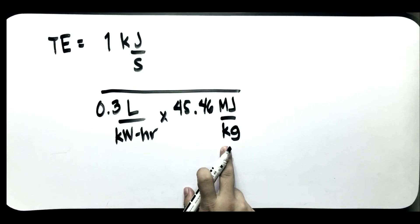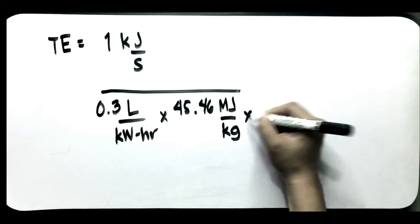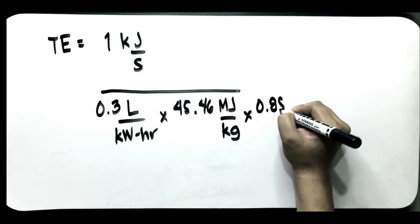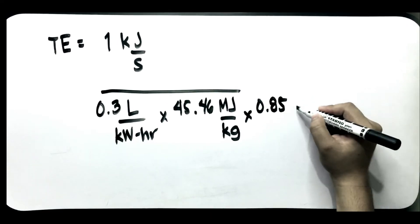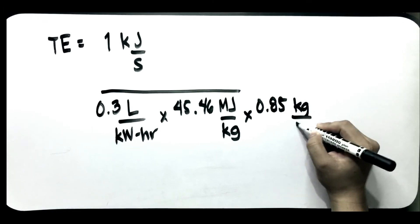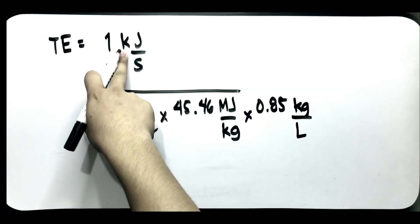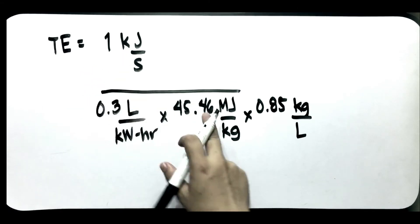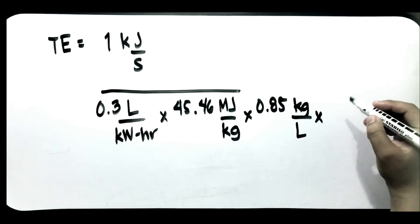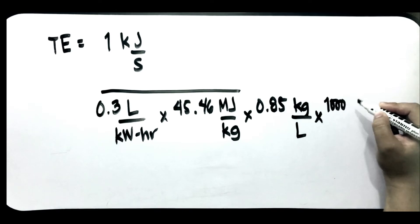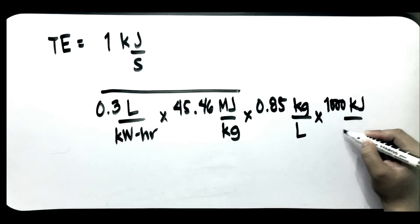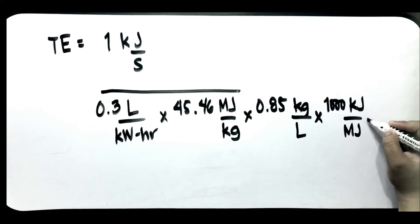Kung naka kilogram ito at naka liters ito, hindi natin siya agad maka-cancel. Kailangan natin yung density naman ng diesel, which is 0.85 kilogram per liter. And since naka kilojoule ito, megajoule ito, gawin natin pareho na lang yung unit nila. 1,000 kilojoule per 1 megajoule.